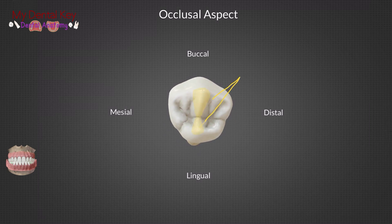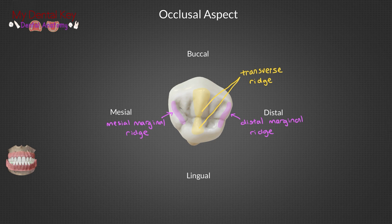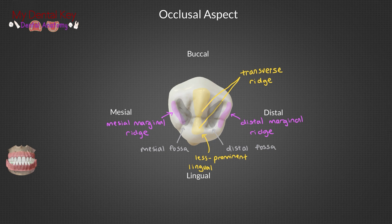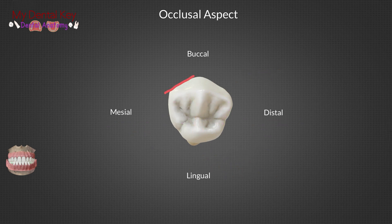When looking at the occlusal view, we can see that the transverse ridge and both the distal and mesial ridges are very prominent — the most prominent of all of the premolars. Because of this, the mesial and distal fossae are very distinct and have a snake eyes appearance. Due to the lingual cusp's small size, the lingual portion of the transverse ridge is less prominent than the buccal portion. Lastly, the tooth has a diamond-shaped occlusal surface. The mesial lingual groove starts in the mesial fossa and tracks lingually.